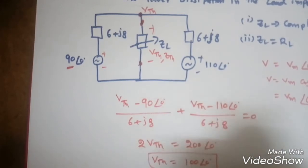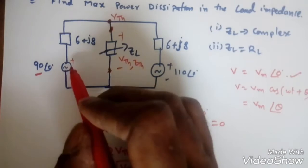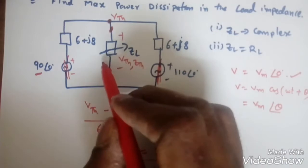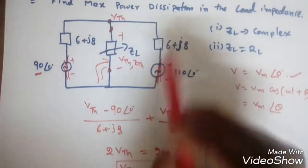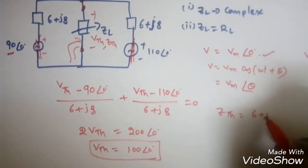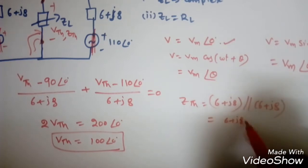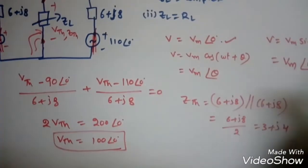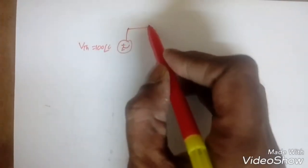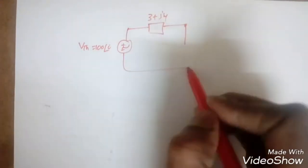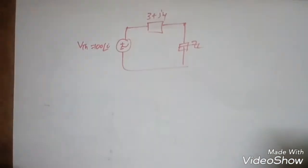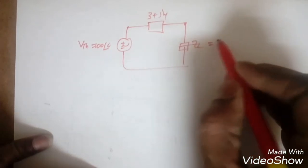To find Zth, the voltage sources are short-circuited. Looking at the circuit, the two impedances are in parallel, so Zth = (6 + j8)/2 = 3 + j4. Replacing the circuit with its Thevenin equivalent model, we have Vth = 100∠0° in series with Zth = 3 + j4, connected to load ZL. When ZL is complex, to deliver maximum power, ZL must equal the conjugate of Zth, i.e., ZL = 3 − j4.